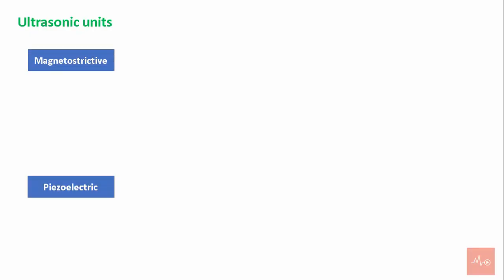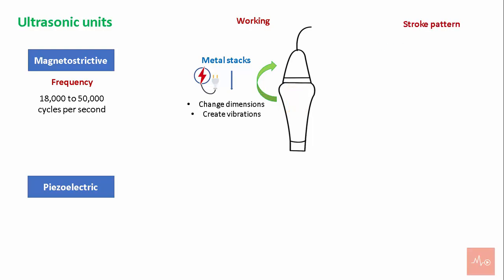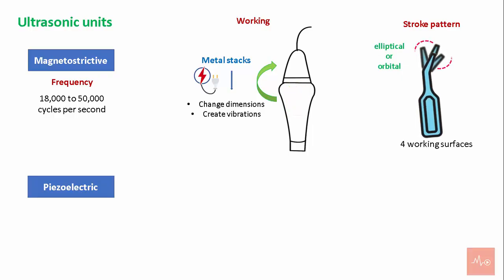Ultrasonic devices are of two types: magnetostrictive and piezoelectric. Magnetostrictive units work at a frequency of 18,500 to 50,000 cycles per second. The magnetostrictive unit consists of metal stacks that change dimensions when electric energy is applied. The vibrations from the metal stacks travel to a connected body, causing vibration of the working tip. The tips move in an elliptical or orbital stroke pattern, giving four working surfaces.